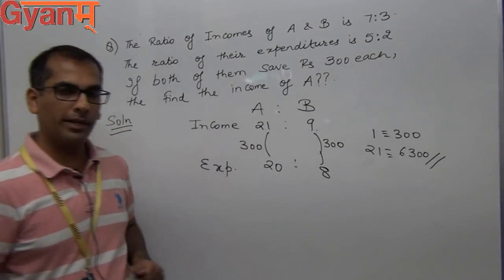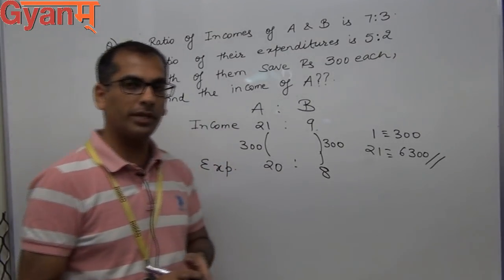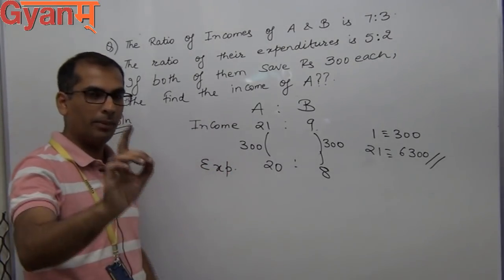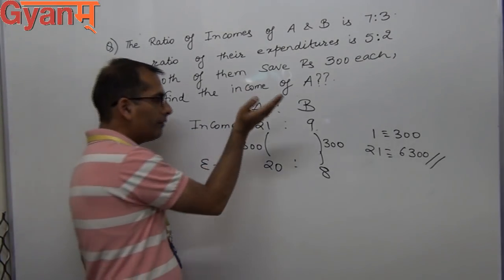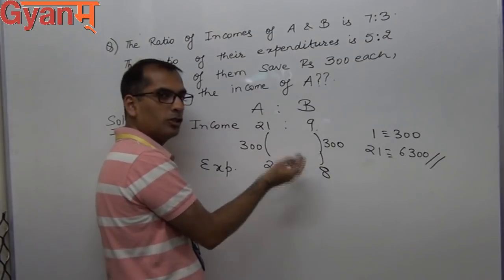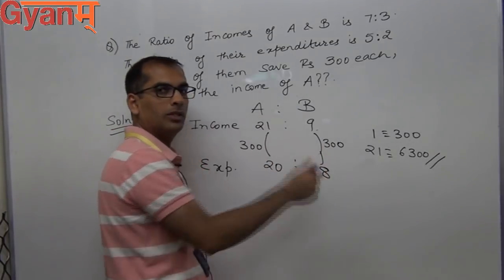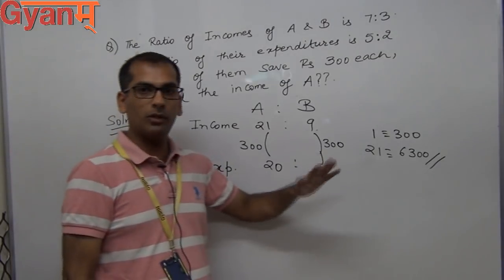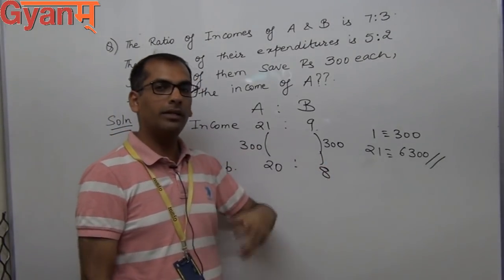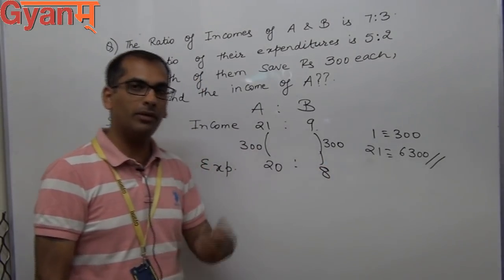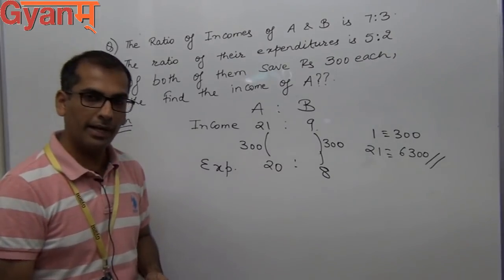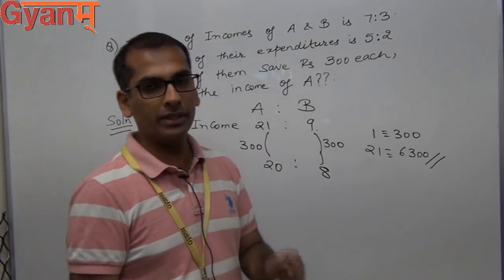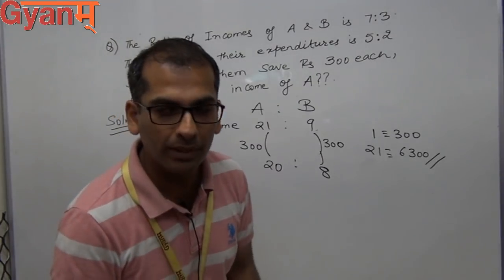I hope this problem is clear. This was a basic problem based on ratio, with the concept based on income, expenditure, and saving. The key point: the difference between income and expenditure is saving. Since savings were equal, the differences had to be equal. If savings are not equal, there is another method we will discuss in the next video. Thank you very much.